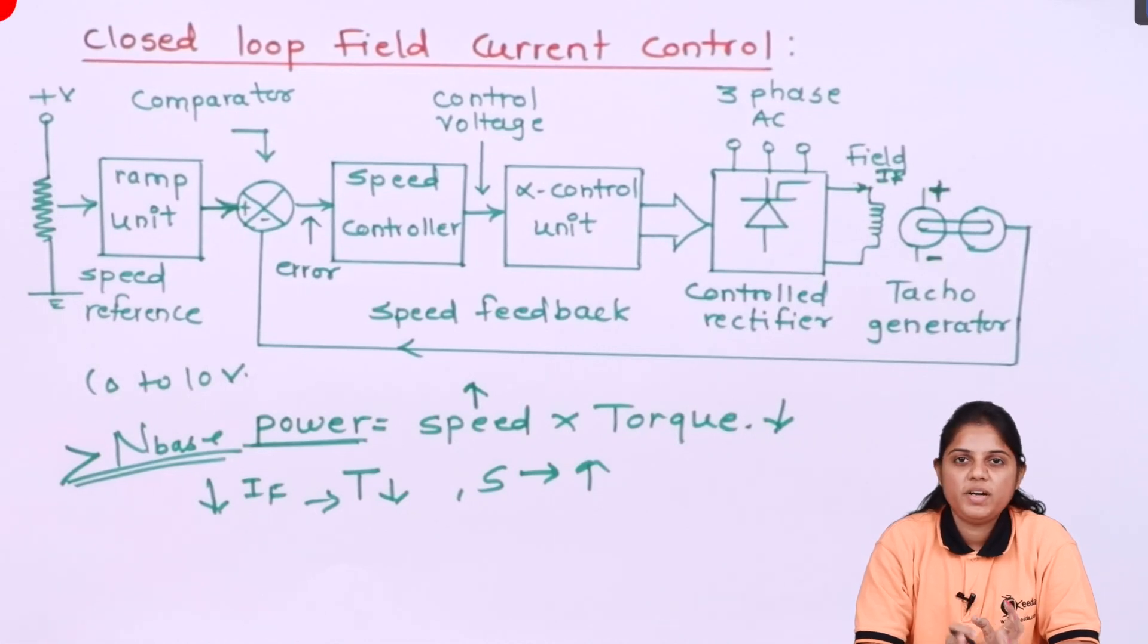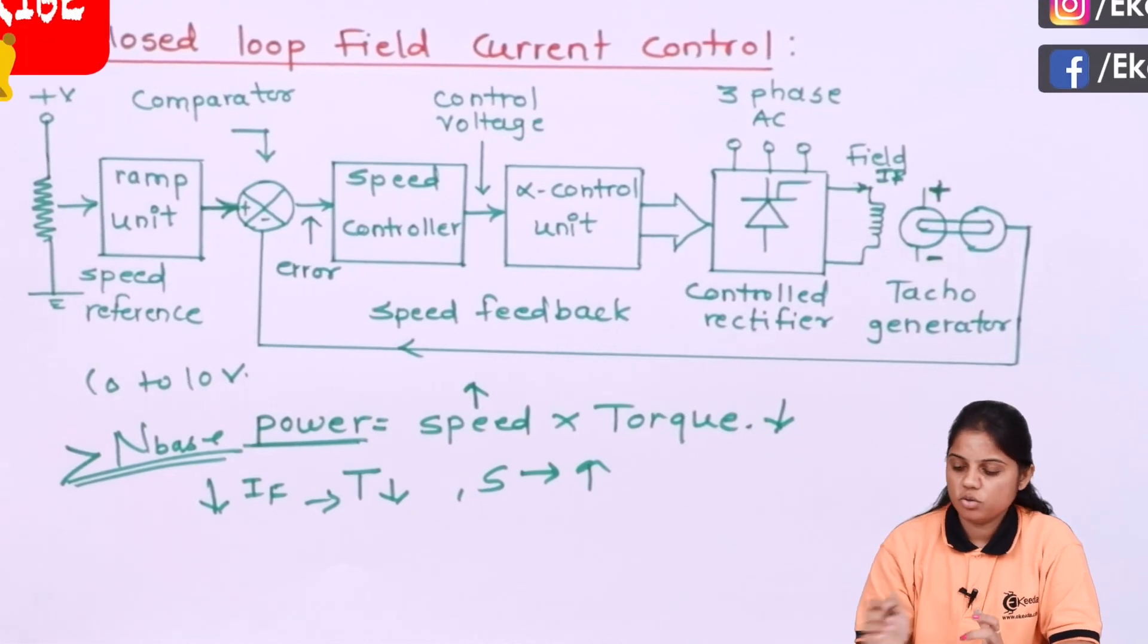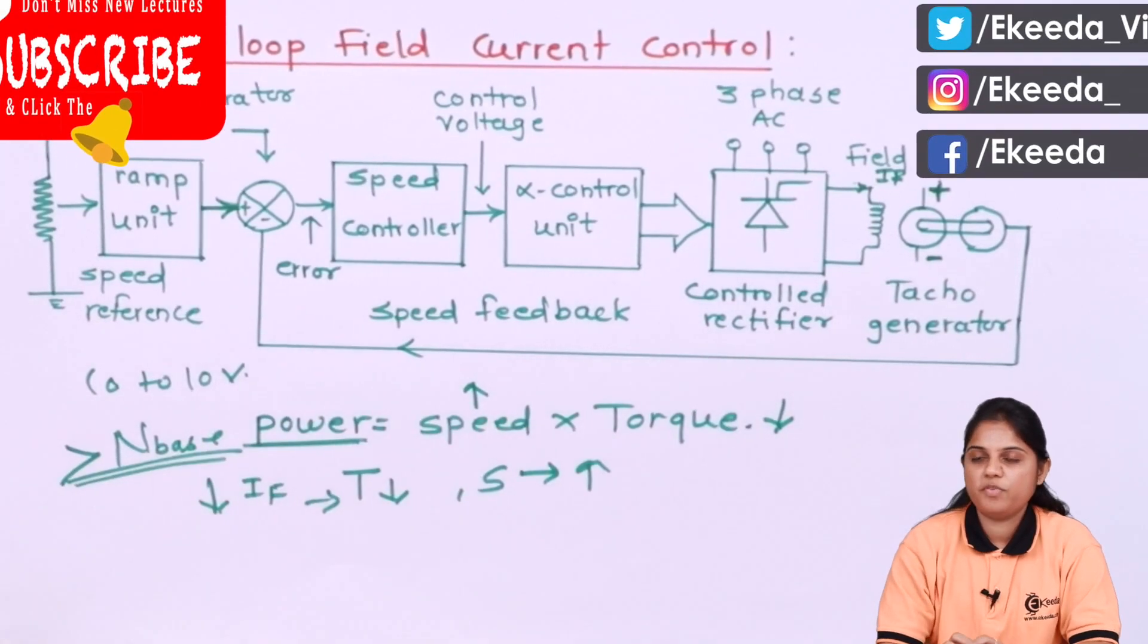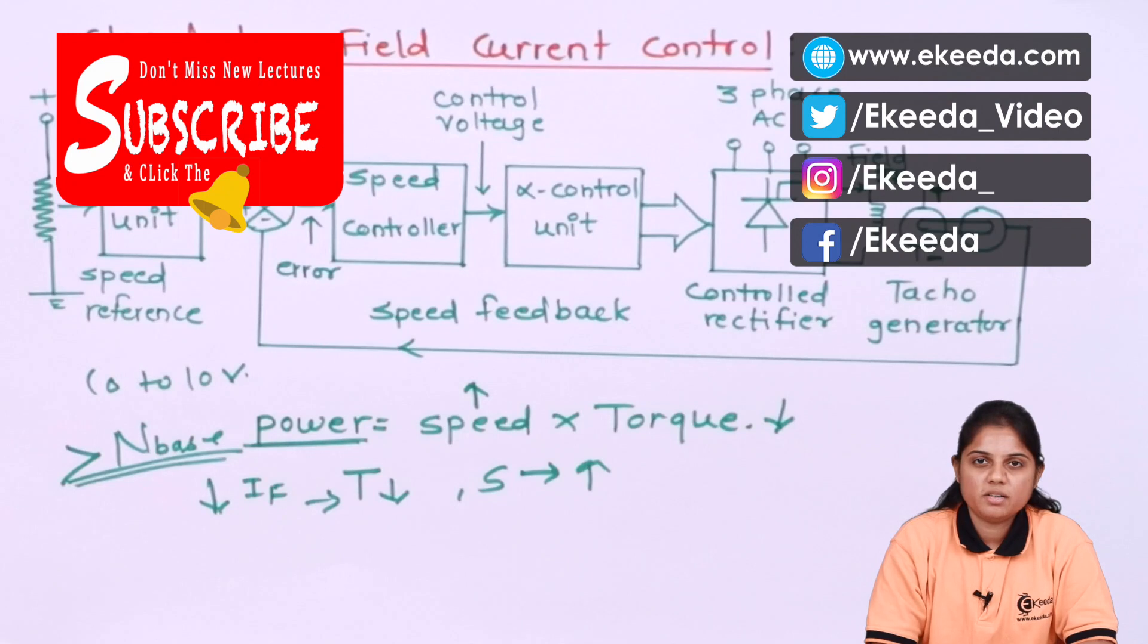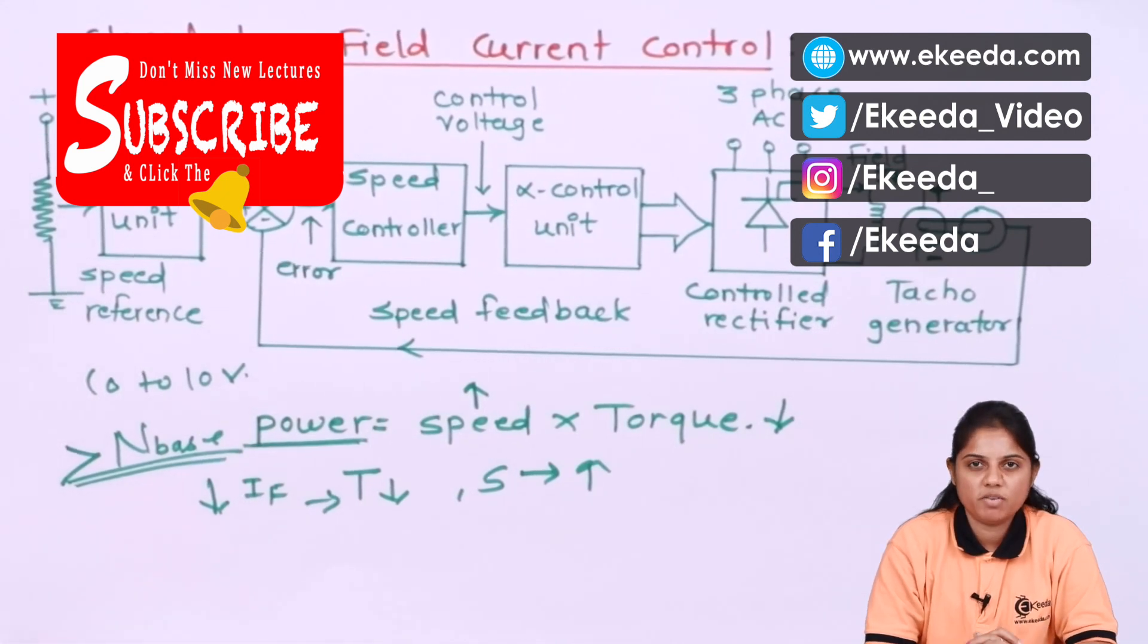So this particular diagram is given for the second section, that is the constant horsepower region, or you can say it is the field current control region. So this is how the closed loop field current control is working. I hope you understood what is closed loop control for the armature voltage and for the field current. Both are different but they work in a similar way.